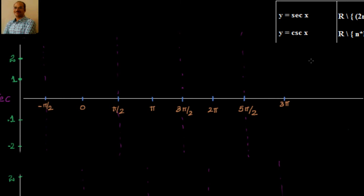We know that cos(0) is 1, so secant of 0 is equal to 1.